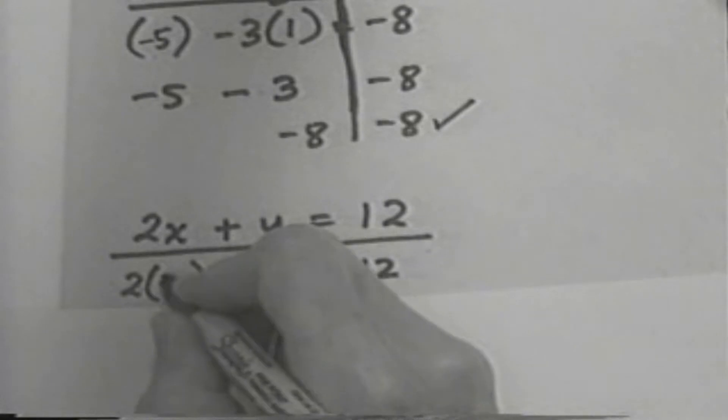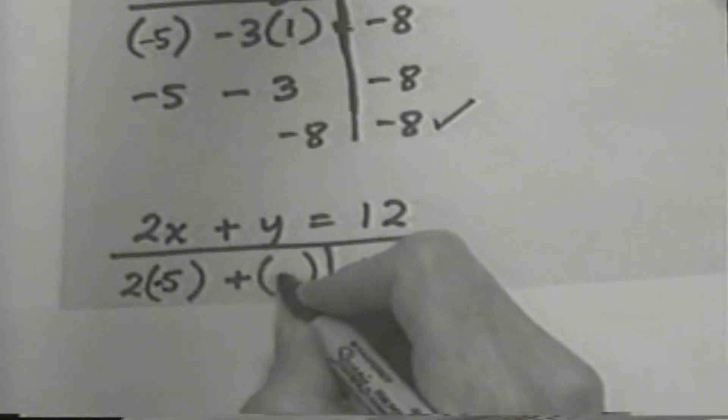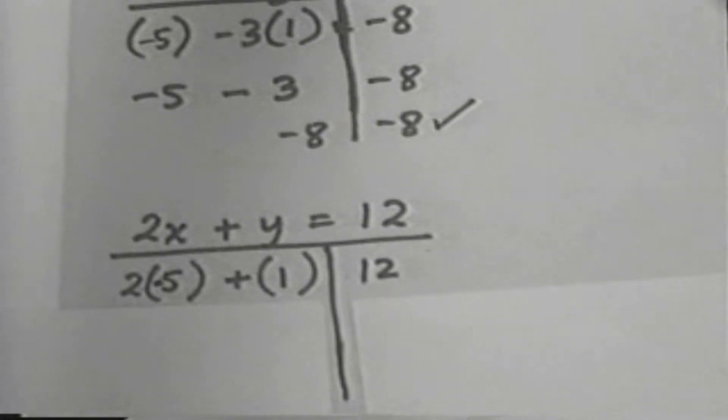We'll fill in our x number, which is negative 5. We'll fill in our y number, which is 1. We have 2 times negative 5 plus 1. That gives us negative 10 plus 1, 12 on the right.